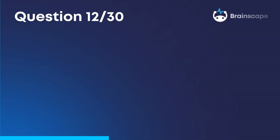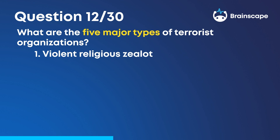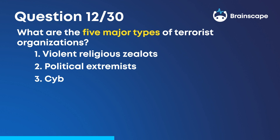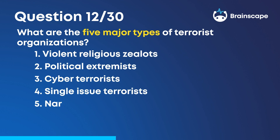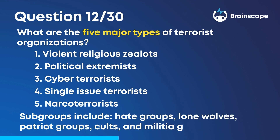Question 12. What are the five major types of terrorist organizations? Violent religious zealots, political extremists, cyber terrorists, single-issue terrorists, and narco-terrorists. Subgroups include hate groups, lone wolves, patriot groups, cults, and militia groups.